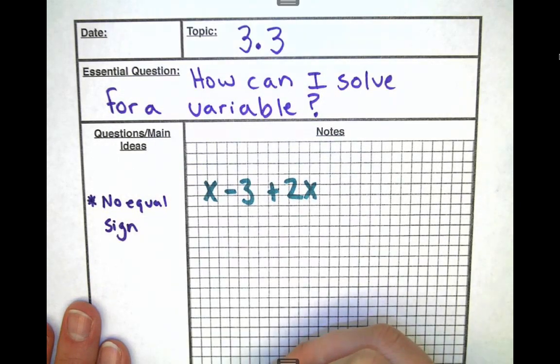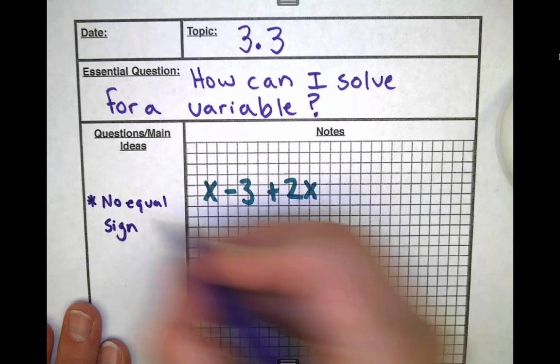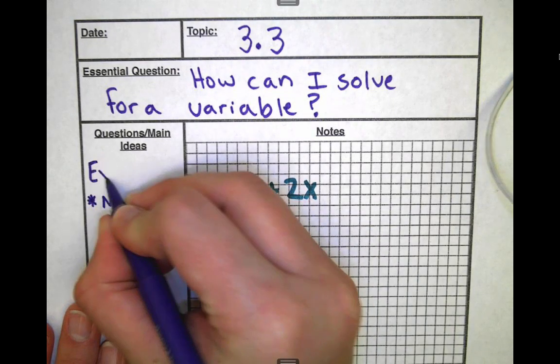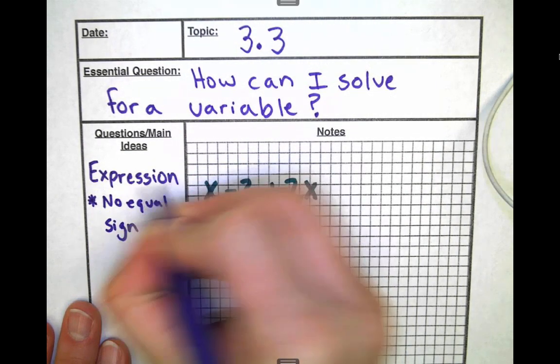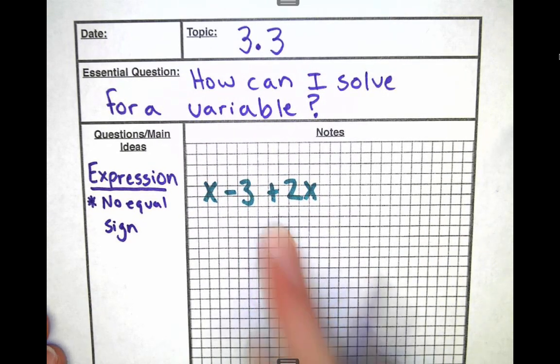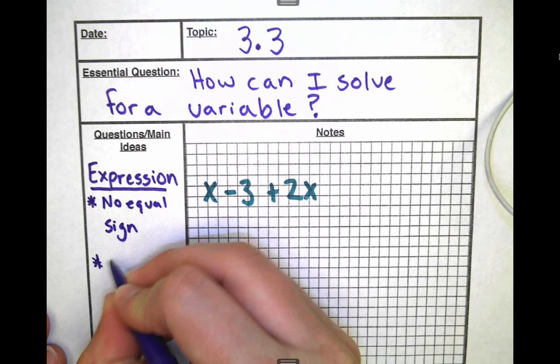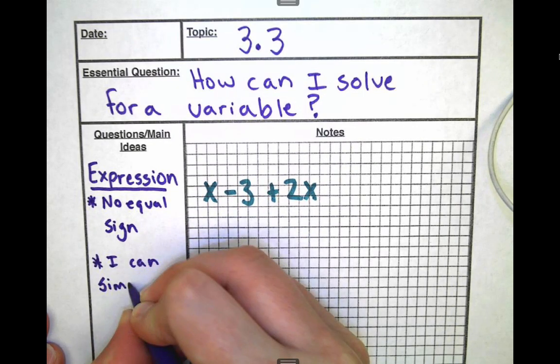With no equal sign, I don't have an equation. The only thing I have here is an expression. When there's not an equal sign, we say this is an expression, and we can simplify it. I can simplify. That is something I can do, but I can't solve for x.